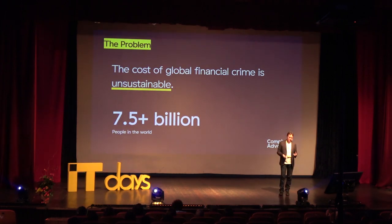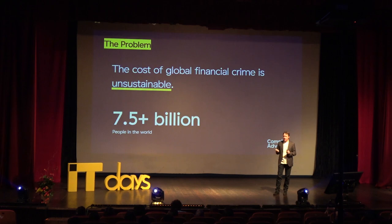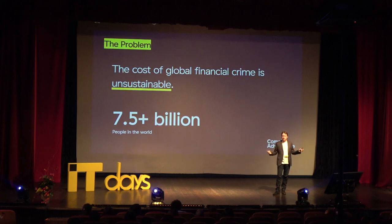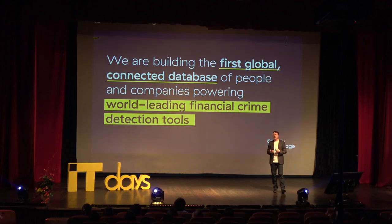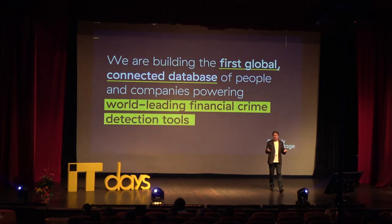Trying to detect or prevent money laundering is an incredibly difficult problem, which is part of the reason we have such a low success rate today. Of the seven and a half billion people in the world, the vast majority are trying to do the right thing — you're looking for a fraction of one percent, and that fraction looks very similar to the rest of us. Some people describe this as finding a needle in a haystack, but I'd contend it's more like finding a piece of straw in a haystack — you might find it, but you're still not 100% sure you've got it. This is an incredibly important problem that needs the smartest minds, outstanding systems, and absolutely the best data.